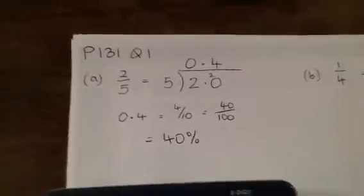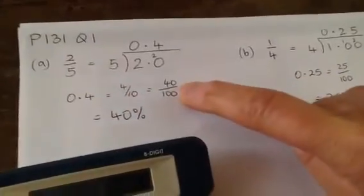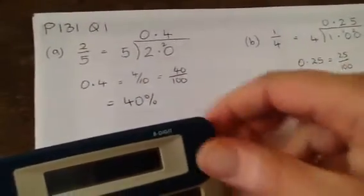So in our first one, 2 fifths, we worked out that when you divide 2 by 5, you get 0.4, which is of course 4 tenths, which is 40 over 100, so 40%.